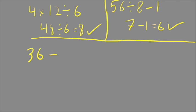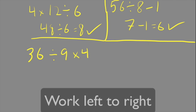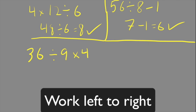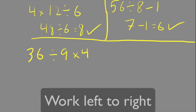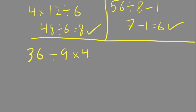Here I've got 36 ÷ 9 × 4. Again, it's all multiplication or division, so I'm just going to work left to right. 36 ÷ 9 gives me 4, × 4 equals 16.